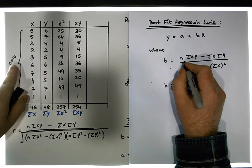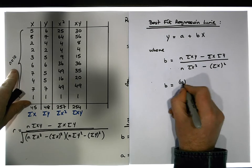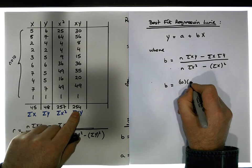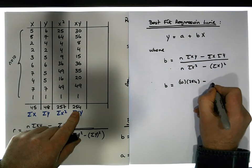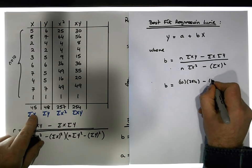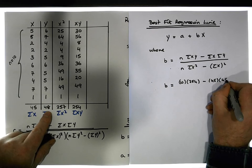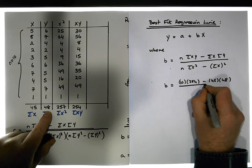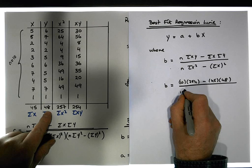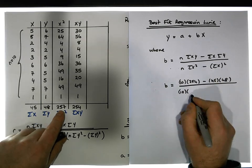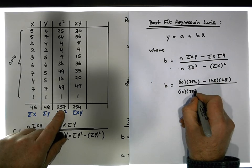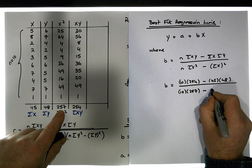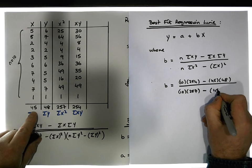There's 10 paired observations so it's 10 times the sum of the xy's is 254 minus the sum of the x's which is 45 times the sum of the y's which is 48 and that needs to be divided by n which is 10 times the sum of the x squared terms which is 257 minus the sum of the x terms which is 45 which needs to be squared.